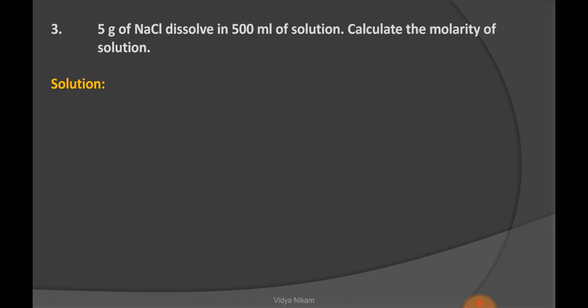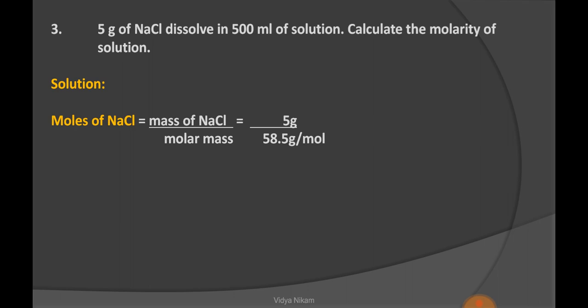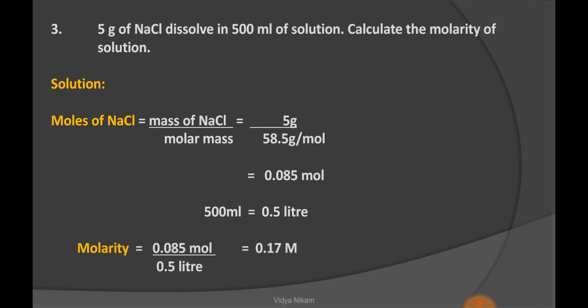Let us see another example: 5 grams of NaCl dissolved in 500 ml of solution — calculate the molarity of the solution. Number of moles is calculated as mass of solute divided by molar mass, which becomes 0.085 moles. Molarity is calculated using the formula: moles of solute divided by volume of solution in liters. 500 ml becomes 0.5 liter. So molarity is 0.17 M.